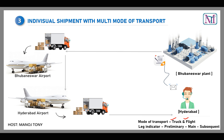For individual shipment with multi-mode of transport, we have three leg indicators. The primary leg — also called preliminary leg — is from the plant to the airport. The main leg is from Bhubaneswar airport to Hyderabad airport. And the subsequent leg is from Hyderabad airport to the customer location. So: Bhubaneswar plant to airport is preliminary leg; Bhubaneswar airport to Hyderabad airport is main leg; Hyderabad airport to customer location is subsequent leg.